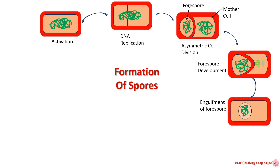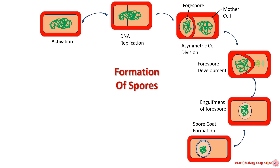The next step is forespore engulfment — the mother cell membrane continues to grow and engulfs the forespore, which is an immature spore. The next step is spore coat formation — within the forespore, layers of specialized proteins are deposited to form the spore coat, which provides protection to the genetic material and other cellular components.